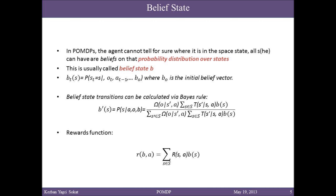Now we come to the heart of POMDPs: beliefs. In POMDPs, we don't know where we are for sure, but we have beliefs about where we can be. It's the probability distribution over our state, usually denoted by B. B of S denotes the probability that the environment is in state S. There is an initial belief state. For simplicity, the time factor t is mostly dropped from the notation. We can calculate the transition from one belief state to another using Bayes' rule. The denominator is a normalizing constant so that belief states sum to 1. We can then update rewards from beliefs, which is the sum-product of immediate reward and belief state probability over all states.